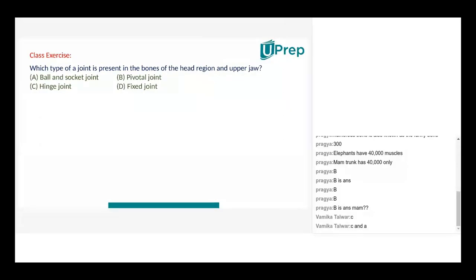Anjali, will you be able to answer this question? Riddhima, just write this answer in the chat box. Which type of a joint is present in the bones of head region and upper jaw? Ma'am, I am asking the question. Can you please tell me what is a fixed joint? Fixed joint is something that is found in the skull. There are joints but it is not moving. For example, the skull, there is a lot of joints but it does not move. That is correct.